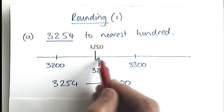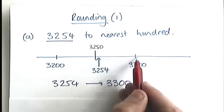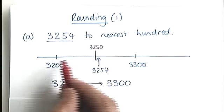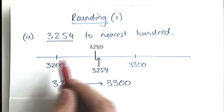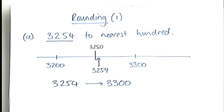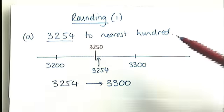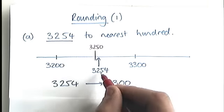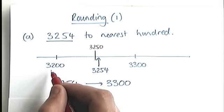Basically, if the number is on this side here of the dividing line, of the halfway line, then you're going to round up. If the number is on this side here, then you're going to round down. Rounding is all about what's the closest number. So we look for what's the closest hundred to 3,254. And the answer is 3,300.